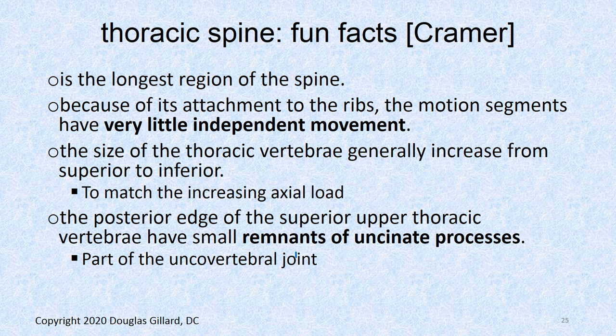Some more fun facts from Kramer: it's the longest region of the spine. Because of its attachment to the ribs, motion segments have very little independent movement. The size of thoracic vertebrae generally increases from superior to inferior to match increasing axial load — T1 looks like a cervical and T12 looks like a lumbar. The posterior edge of the upper thoracic vertebrae have some remnants of uncinate processes, especially T1.